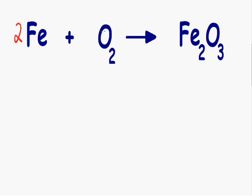Now let's do the same thing for the oxygen. Notice on the left-hand side how we have two atoms of oxygen, and on the right-hand side we have three atoms of oxygen. We need to make this equal. So on the left-hand side I'm going to multiply the two atoms of oxygen by one-and-a-half molecules. One-and-a-half times two is equal to three, and on the right-hand side we also have three, so now our oxygens are balanced.